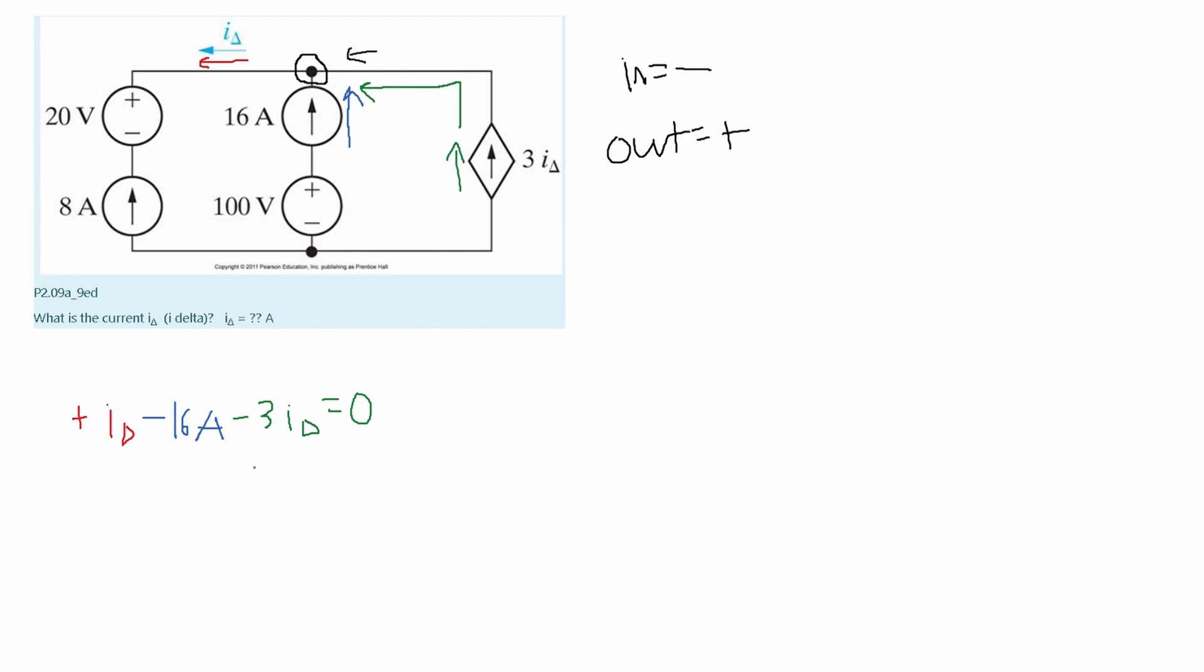I'm going to combine the I deltas and that's going to give me a negative two I delta and then I'm going to set this equal to our 16 amps after moving it over to the right side.